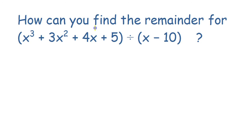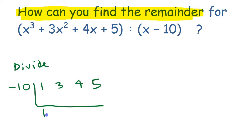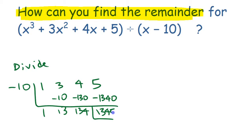How can we find the remainder for this without knowing anything about the Remainder Theorem? What you would do right now is probably divide — whether you use long division or synthetic division. I'll quickly use synthetic division here, set it up with my coefficients: one, three, four, five. Bring that one down, multiply it back, subtract, multiply it back, subtract, multiply it back one more time — one, three, four, zero — subtract to get 1345. That's my remainder.